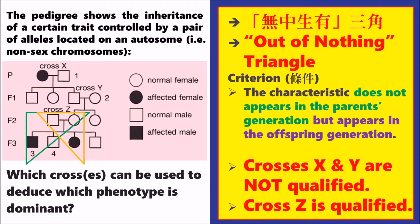In last video, I talked about the secret of the out of nothing triangle — that we can determine the dominant and recessive allele easily. In this video, we are going to learn how to express the thinking process in a logical way.